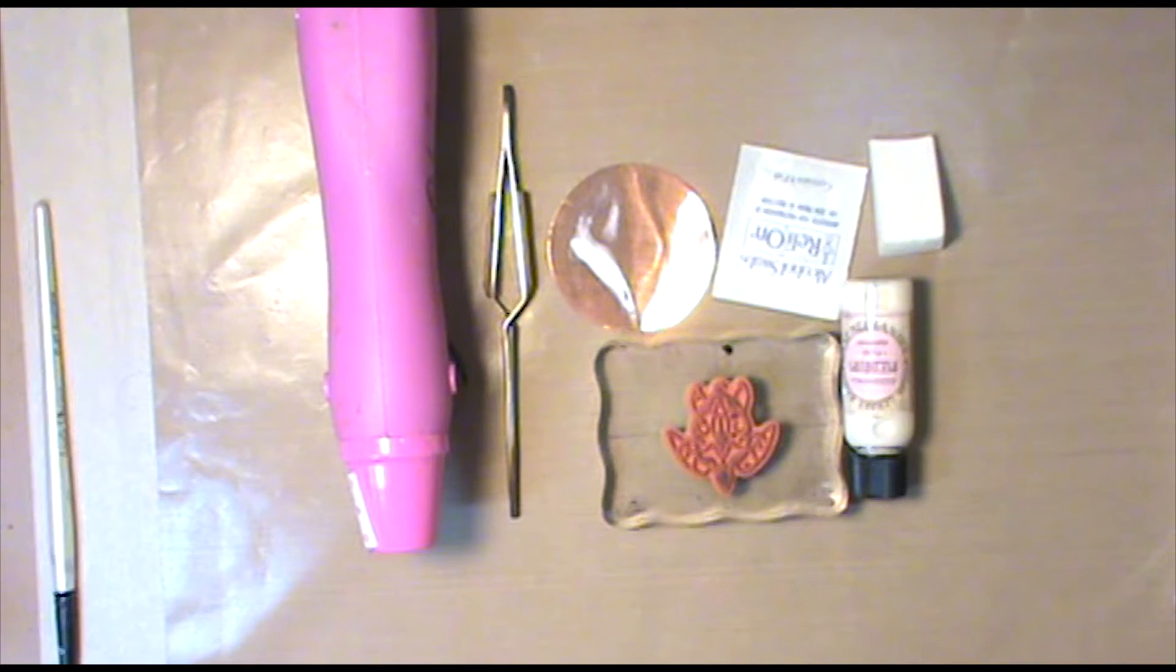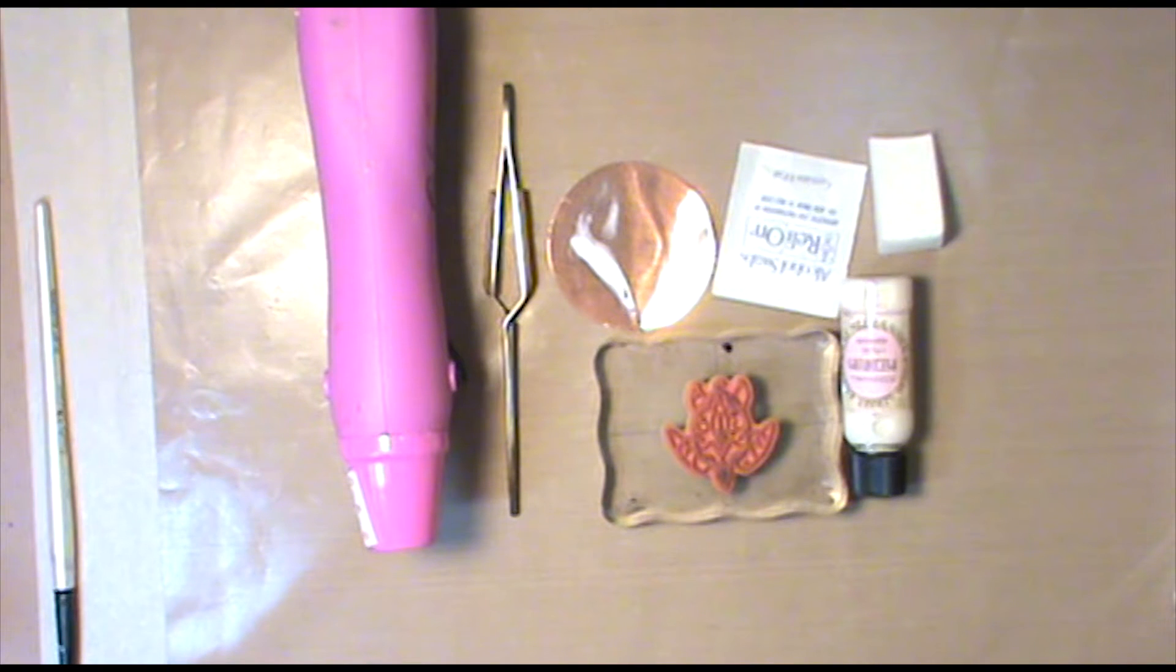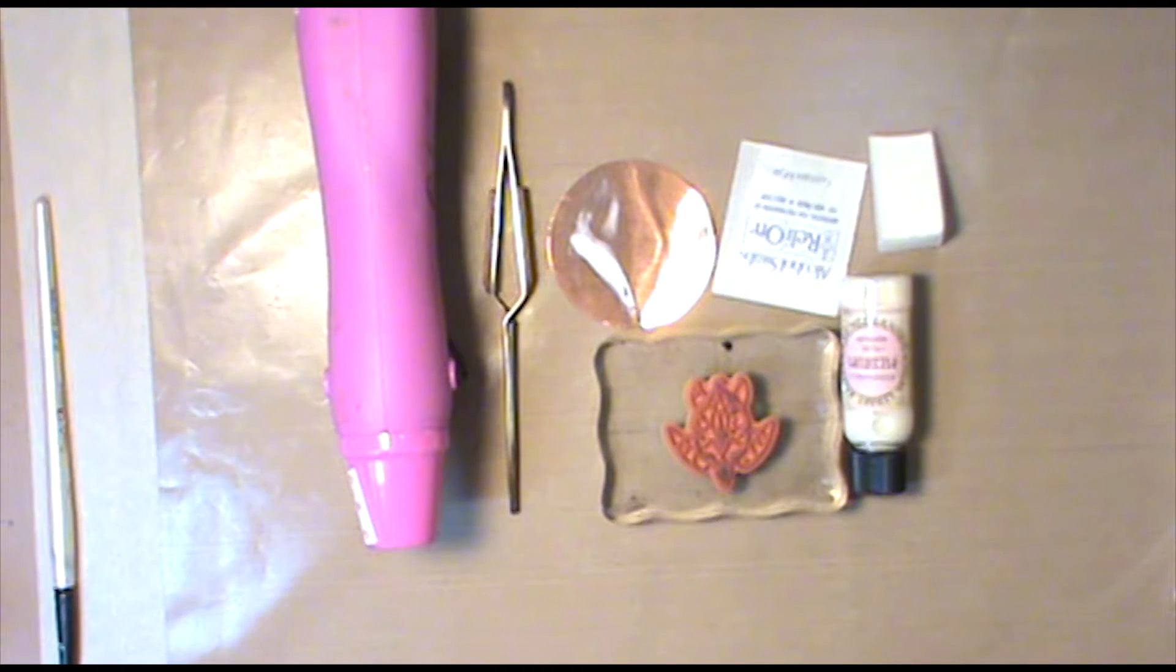I have an alcohol wipe to clean my metal off, to clean the oils from my fingers. You can just use some alcohol and a paper towel or cotton ball if that's what you have, a makeup sponge to apply my Iced Enamels Medium to the stamp with, and a stamp.